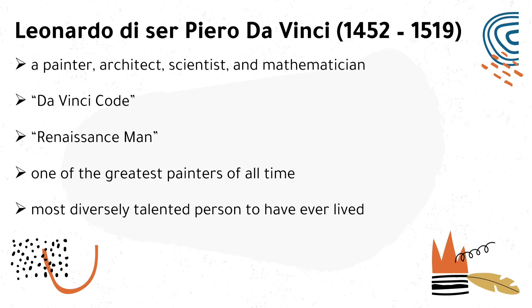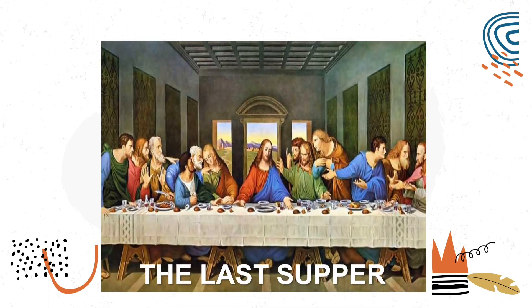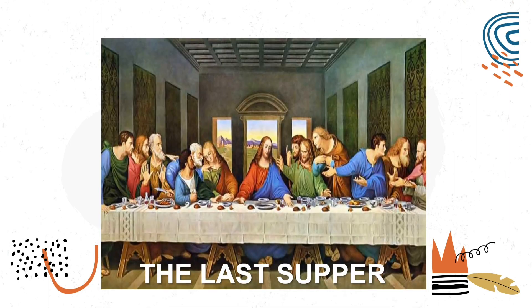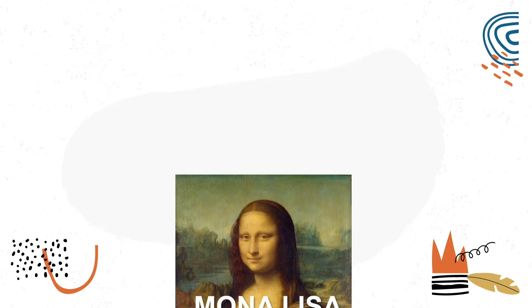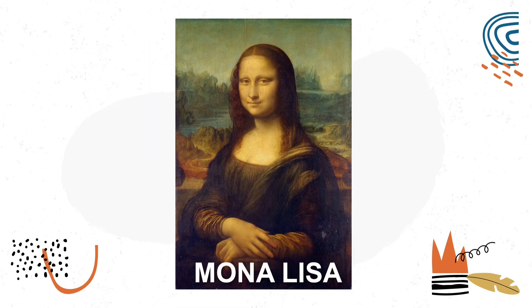The Last Supper and the Mona Lisa are his famous artworks. The Last Supper depicts the dramatic scene in which Jesus declares that one of the apostles will betray him and later institutes the Eucharist. Mona Lisa was a real Florentine woman named Lisa Gerardini, wife of wealthy Florentine silk merchant Francesco del Giocondo. The painting is thought to have been commissioned for their new home and to celebrate the birth of their second son, Andrea.